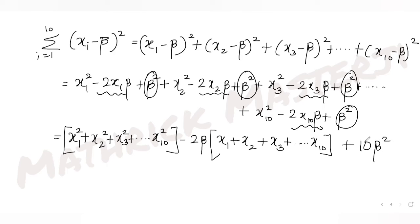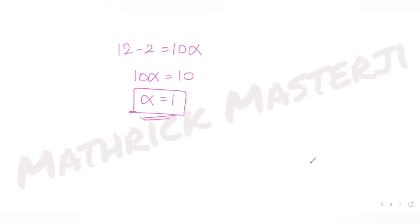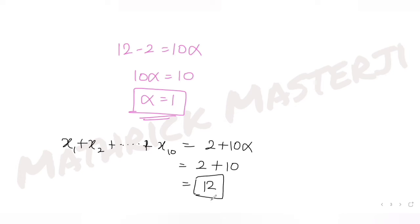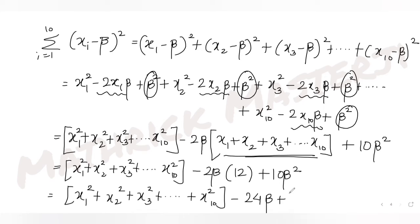So I have: (x1² + x2² + ... + x10²) minus 2*beta*(sum of xi) + 10*beta². The sum of the 10 observations is 2 + 10*alpha = 2 + 10 = 12, so it becomes: (sum of xi²) minus 24*beta + 10*beta² = 40.